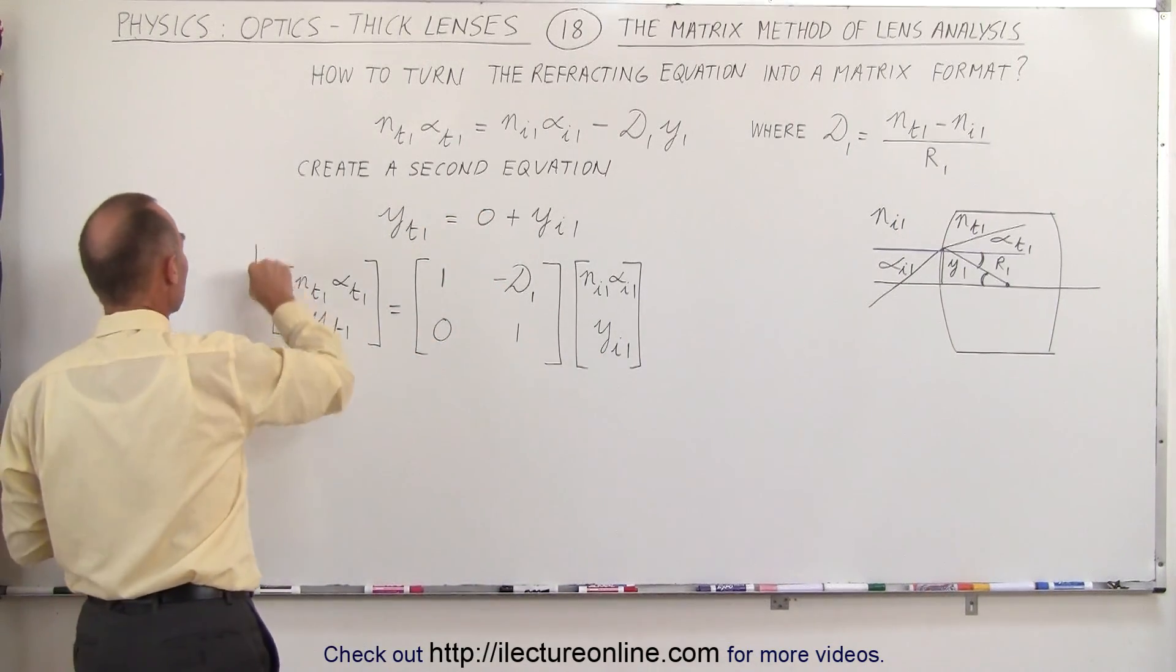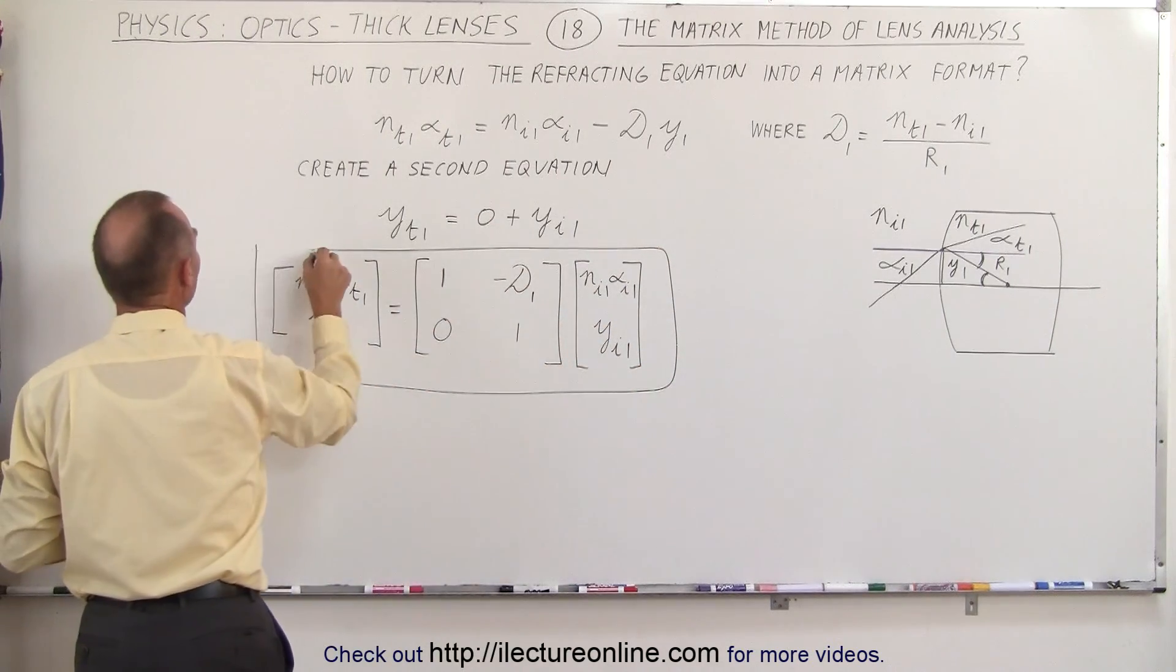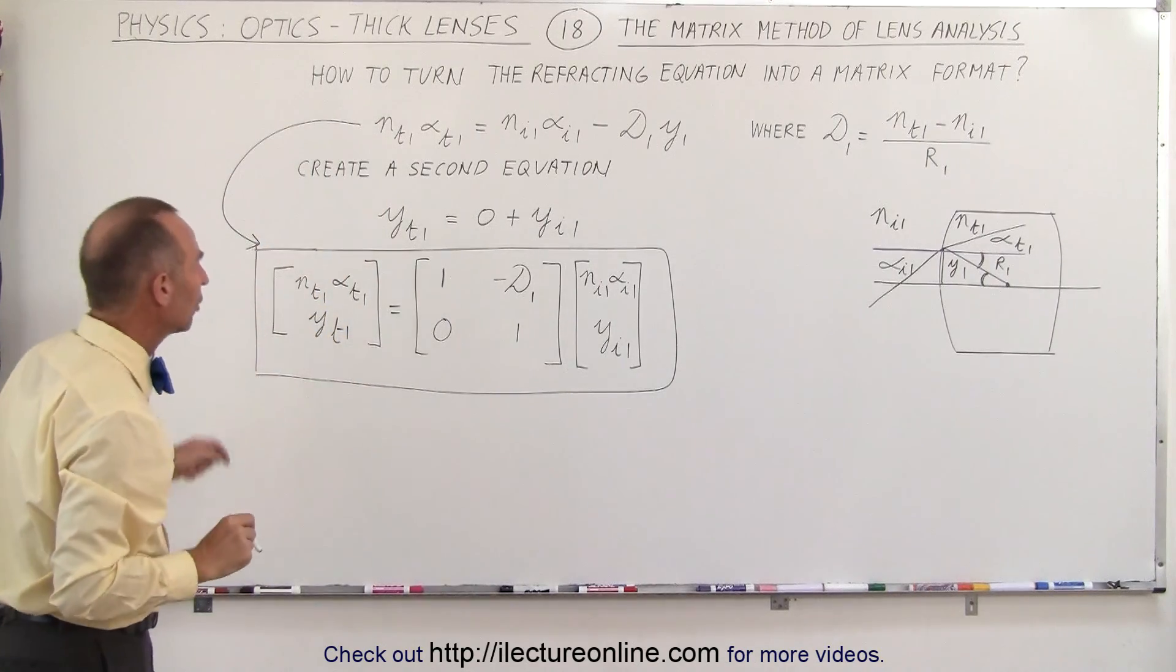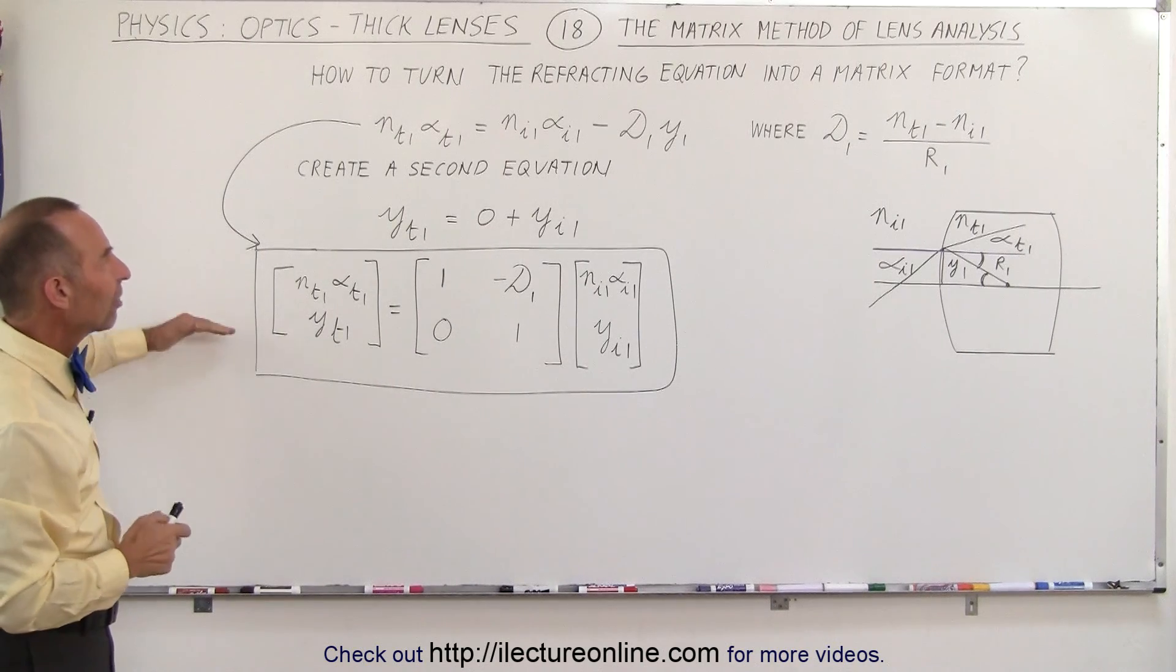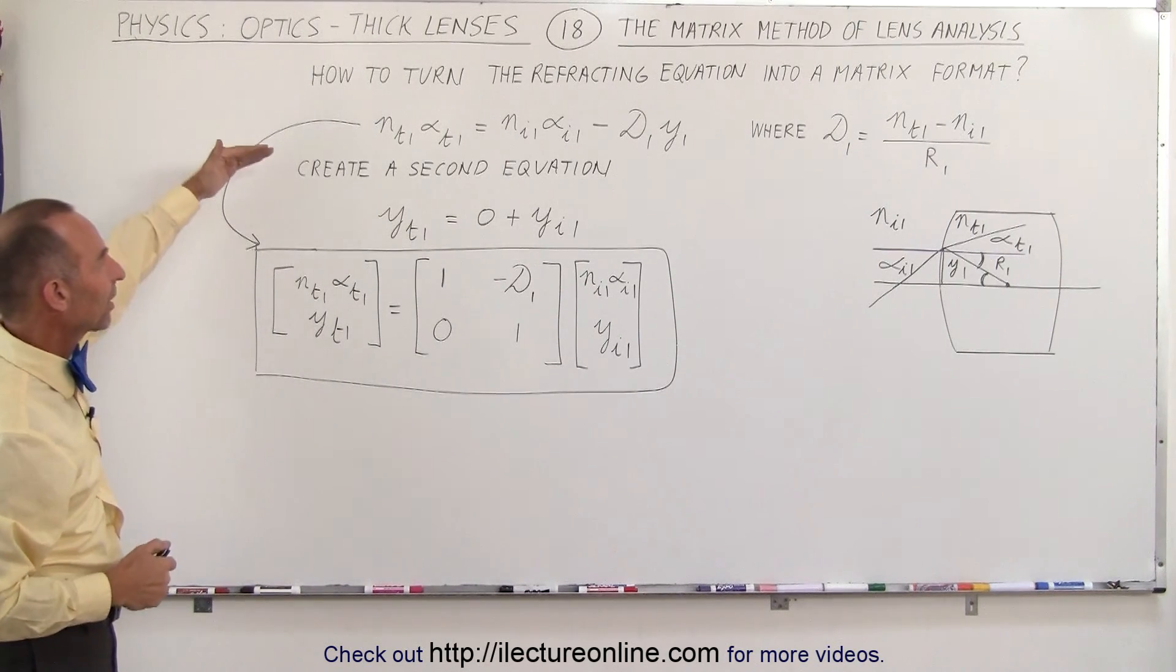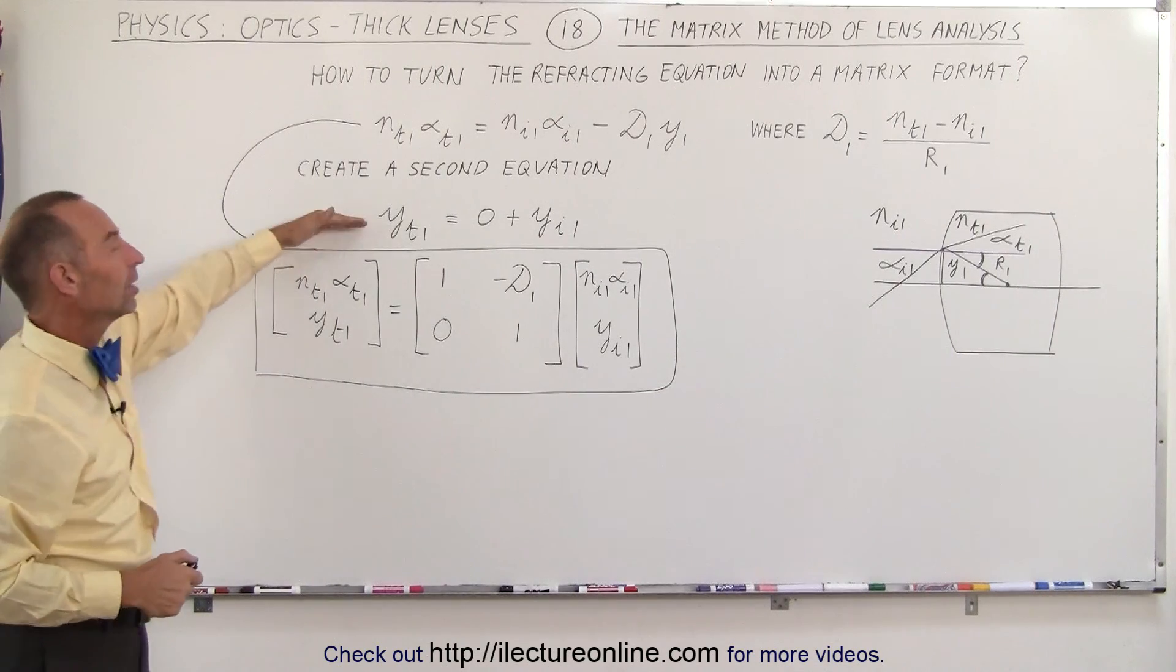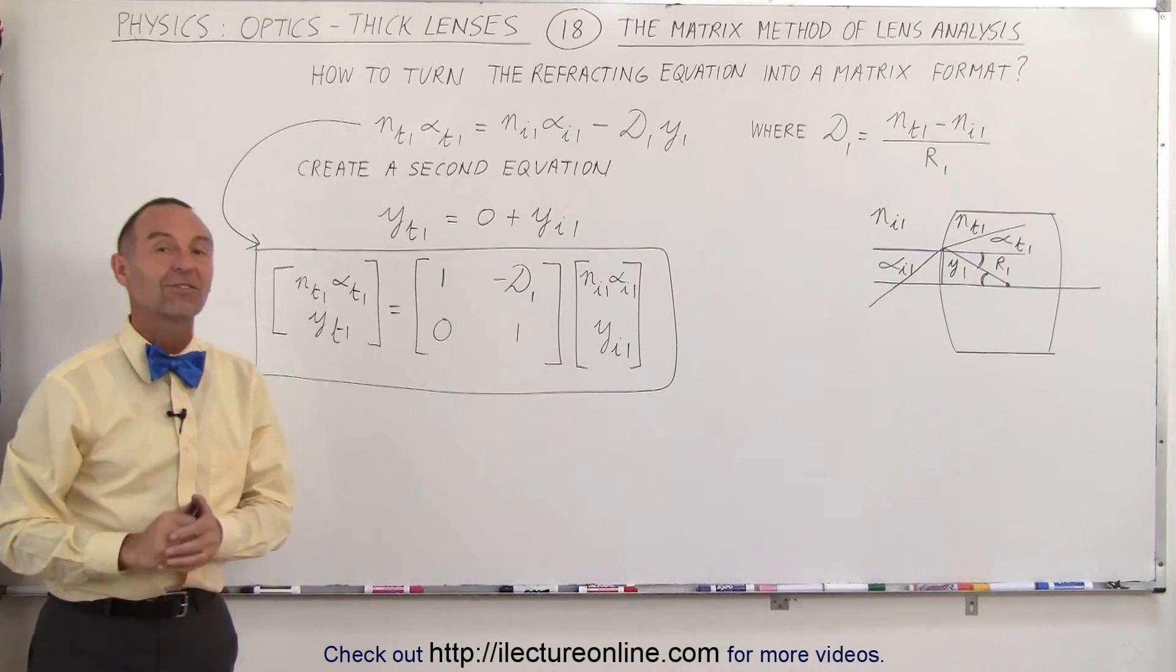So now what I have here is I have a matrix format that will take this refracting equation and turn it into a format that I can work with in the matrix world. And so that's how we transition from the refracting equation to the matrix format of the refracting equation with the little help of a secondary equation to make it work and that's how that's done.